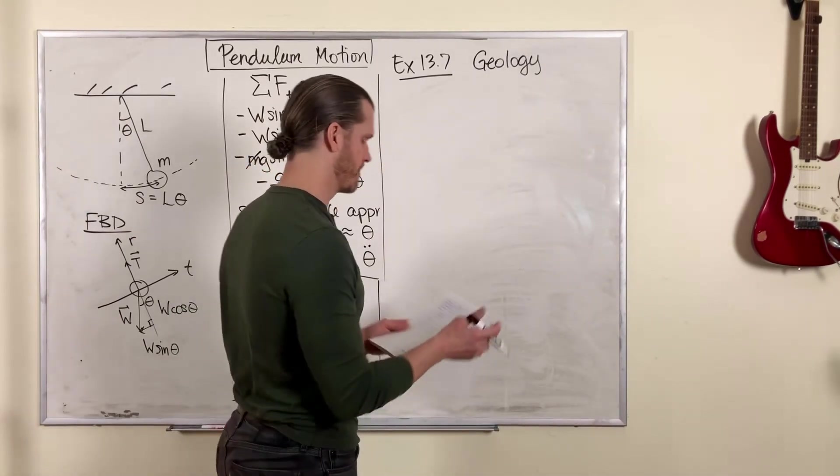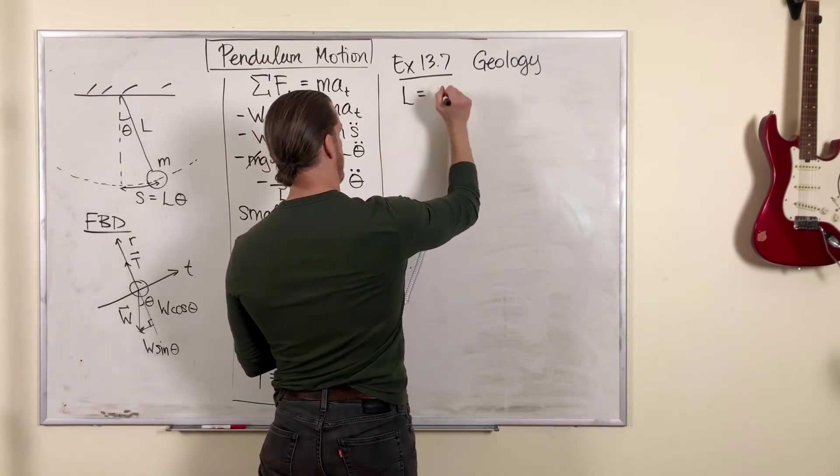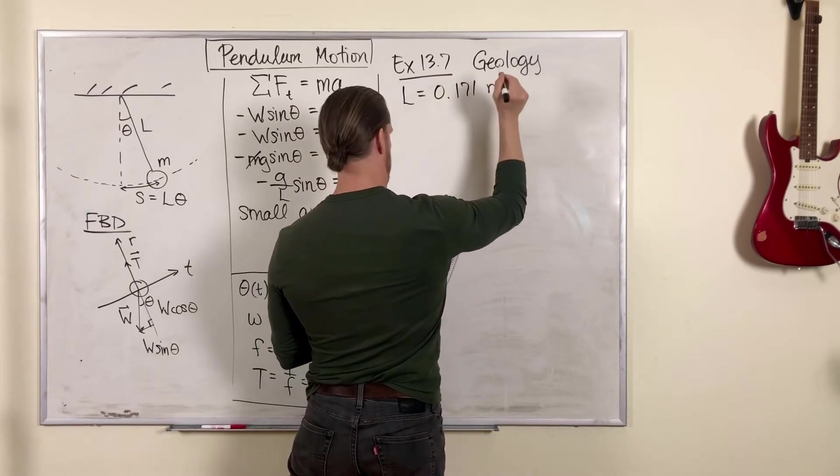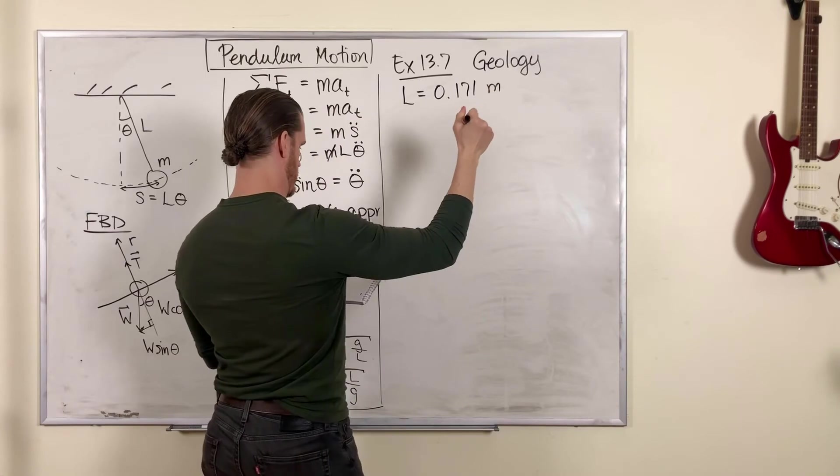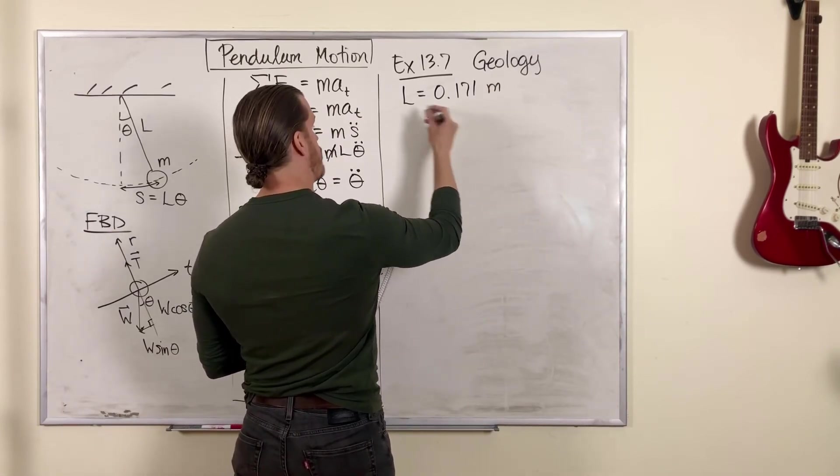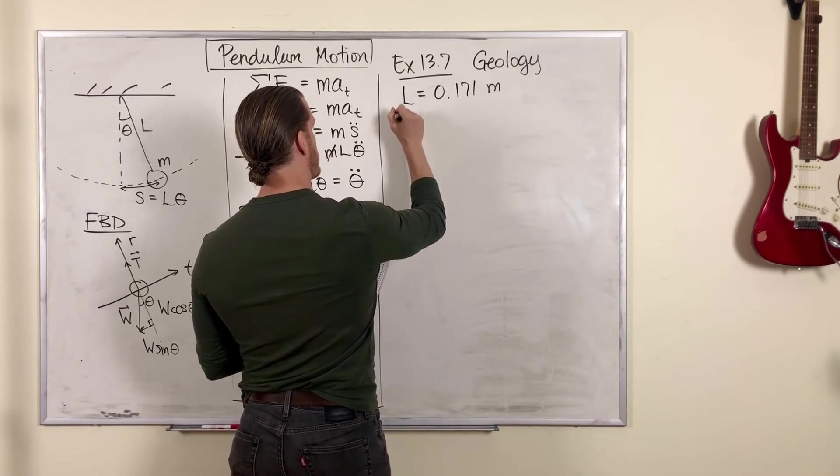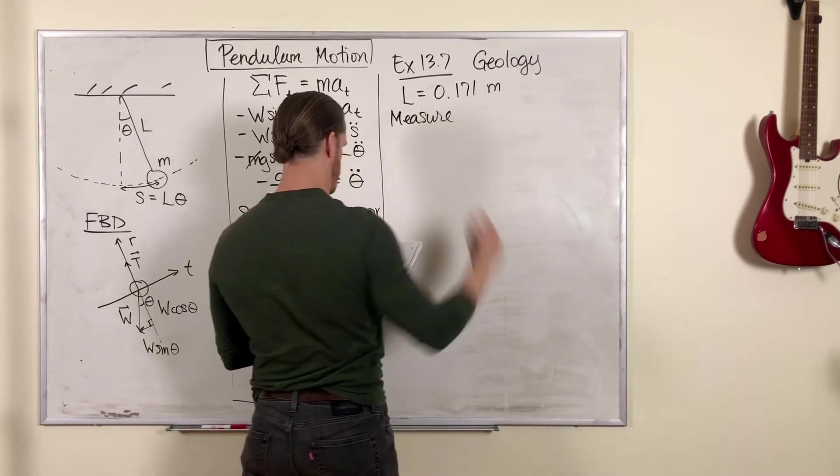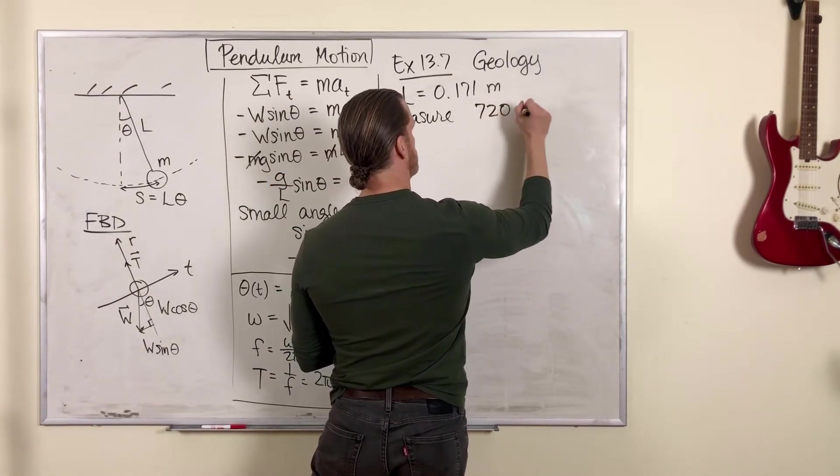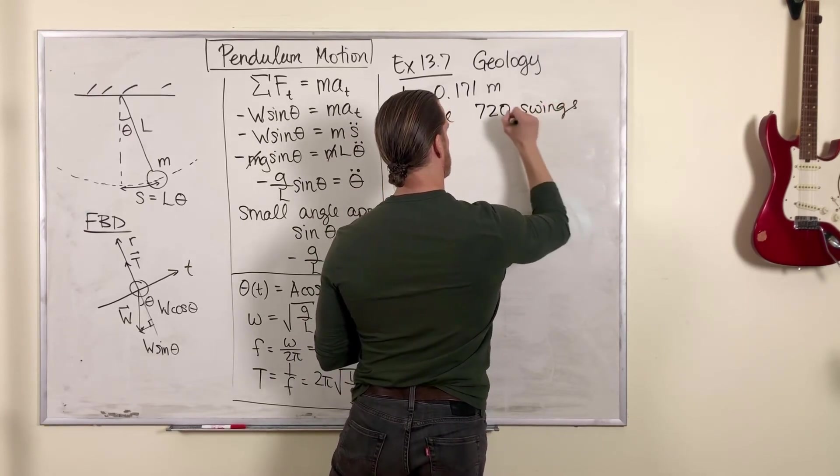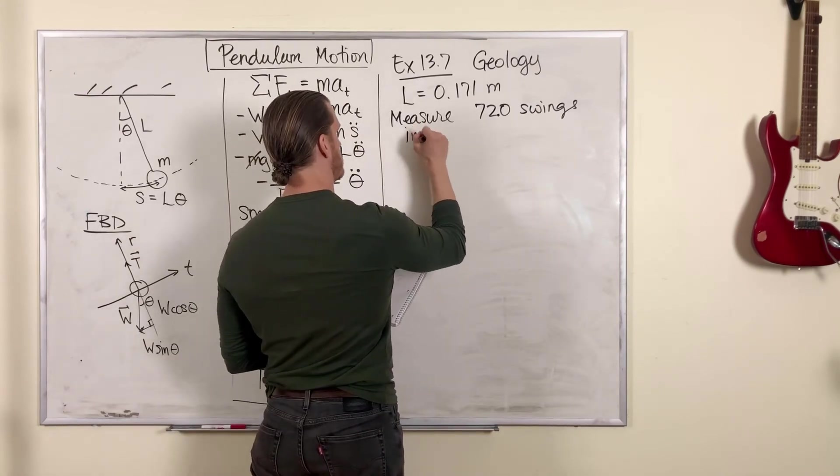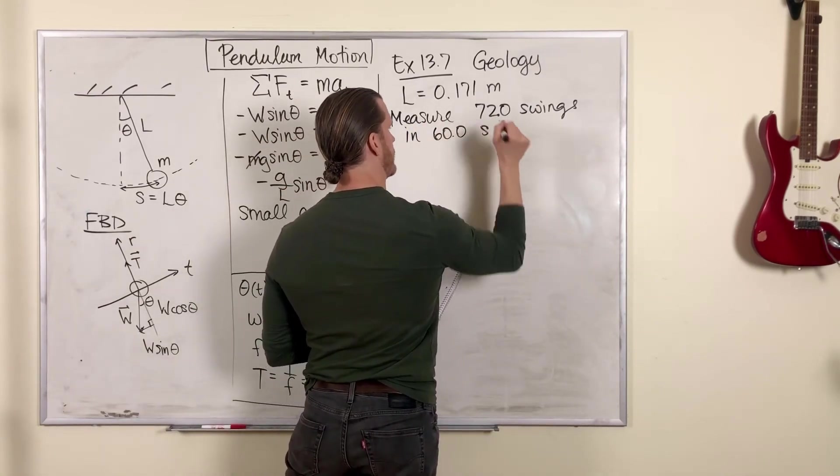So in example 13.7 we're going to use a pendulum to measure the local value of g and we'll use a pendulum with length 0.171 meters and we've taken a measurement that it swings 72 times in one minute, in 60 seconds.